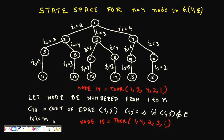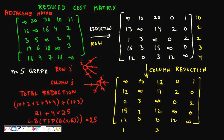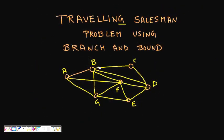What is the Traveling Salesman Problem? Given a graph G(V, E), you have to find a cycle that covers all the nodes of the graph exactly once, starting from any node and returning to it. For example, A→B→C→D→E→G→A is a simple cycle where we start from A and come back to A — this is a traveling salesman cycle.